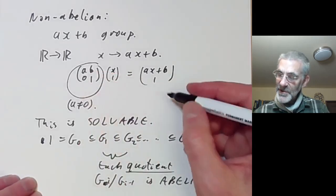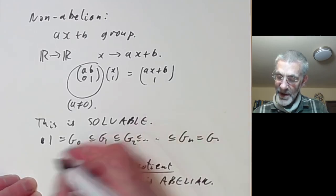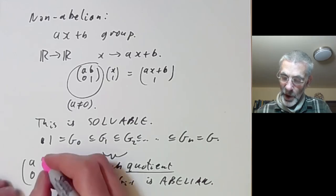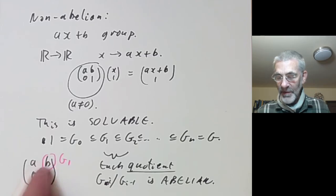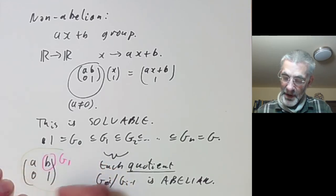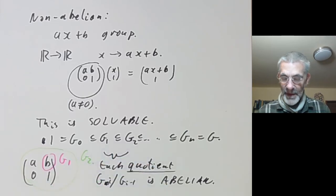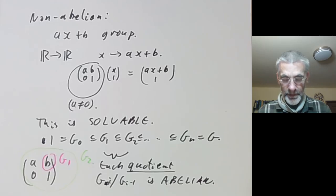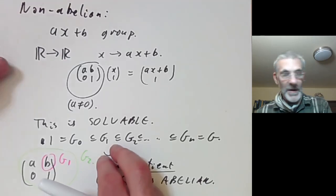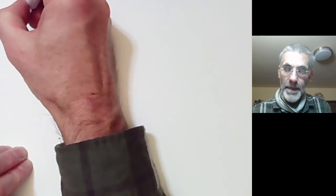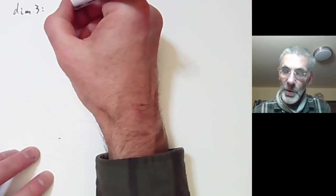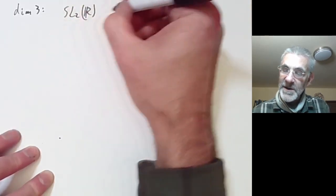In the case of the 2×2 matrices [A B; 0 1], G₀ is just the identity, G₁ is the group of all elements with A=1 and B anything, and G₂ is the whole group. So in this particular case the chain has length just one. Now let's move on to groups of dimension three. Here we come across what is possibly the single most useful Lie Group of them all: the group SL₂(R), the special linear group consisting of all matrices [A B; C D] with AD−BC = 1.